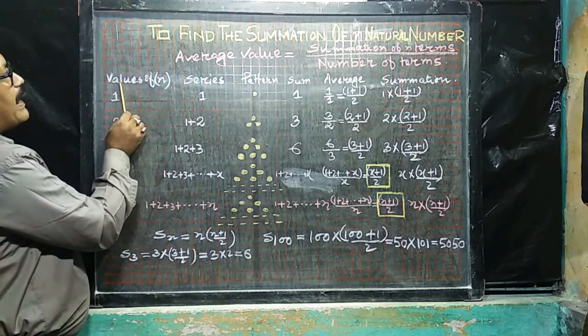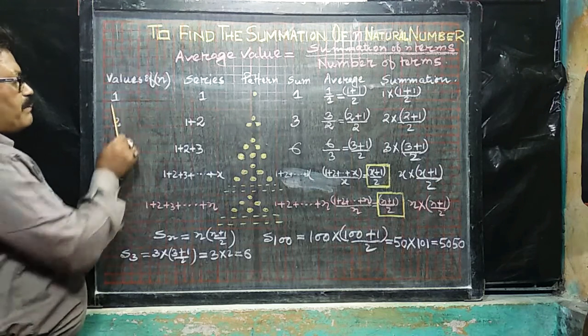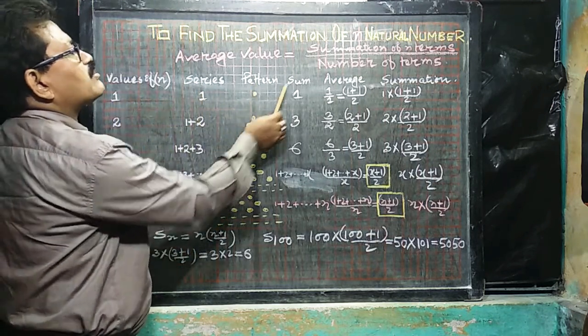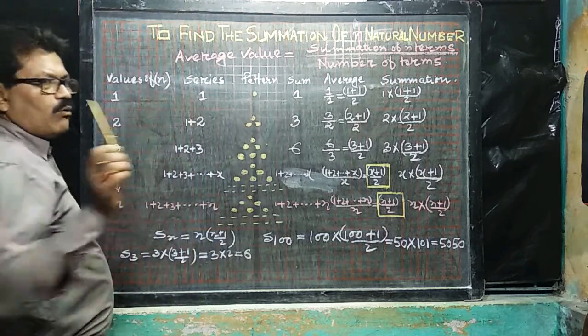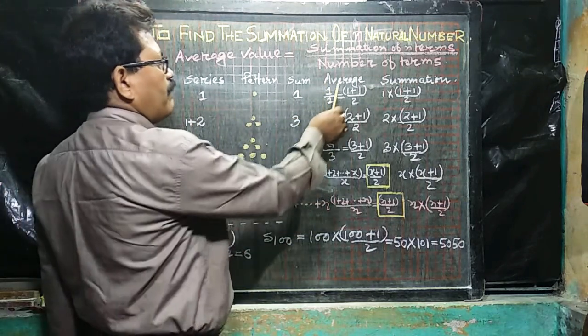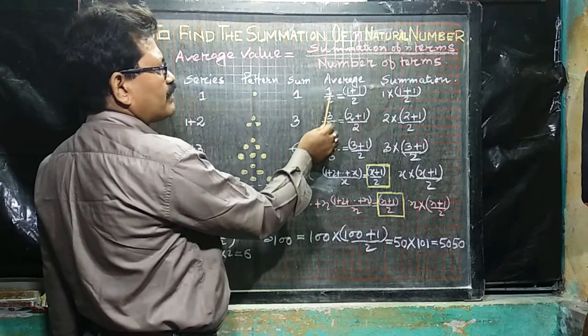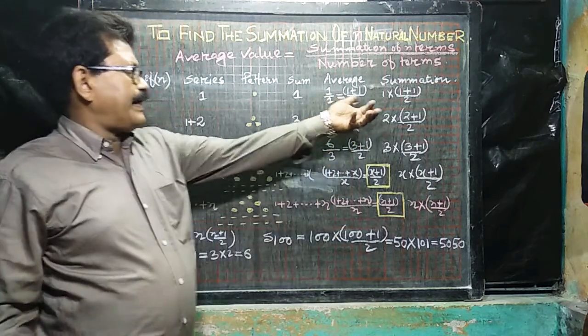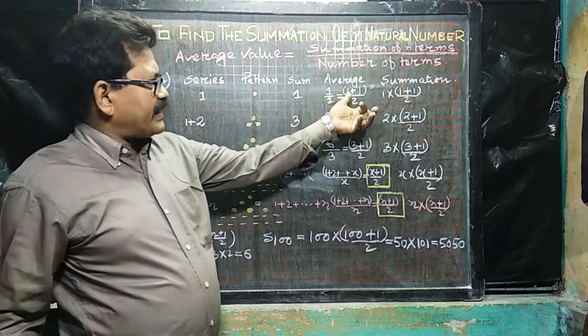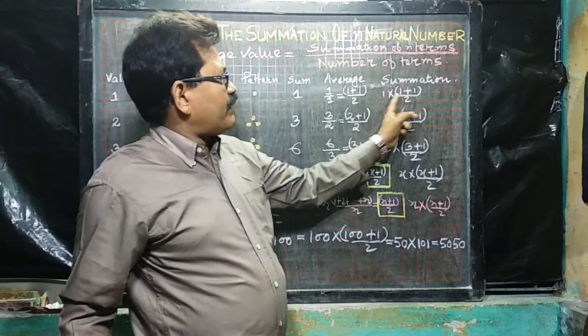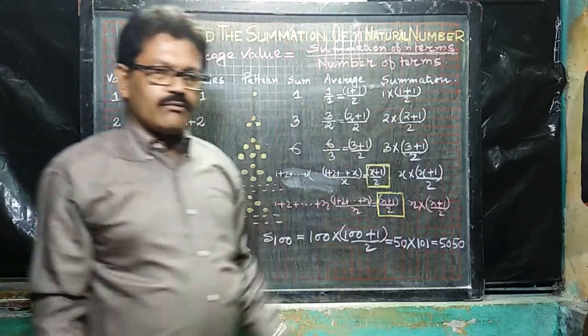Now, we have designed here values of n. Say for example, 1, series 1, pattern is like this, sum is 1, as 1 is here. So average value, look at here, average value 1 by 1, that can be written as 1 plus 1 by 2. As we are tending to the number of terms to be taken here, in consideration. Summation, 1 into 1 plus 1, divided by 2. This is the pattern.